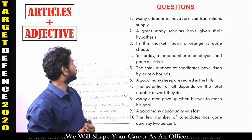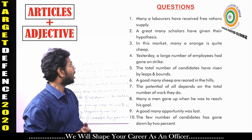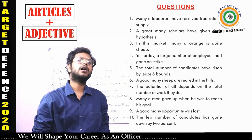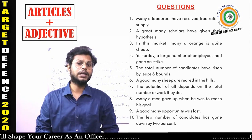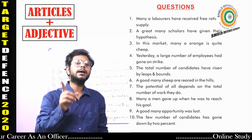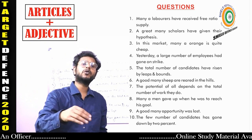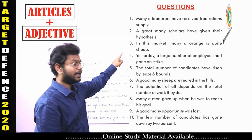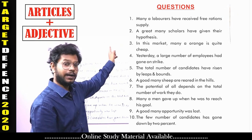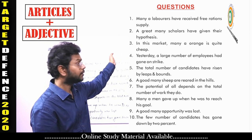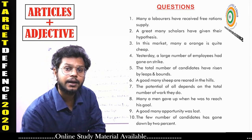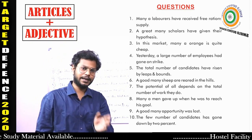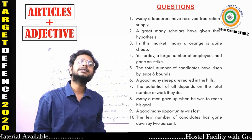Question 2: 'A great many scholars have given their hypothesis.' After 'A great many,' the next word should be plural — 'scholars' is correct. The verb should be plural — 'have' is correct. 'Their' is also correct as it comes from the plural 'they.' This sentence is no error.